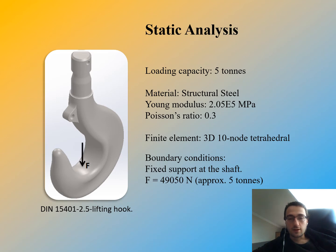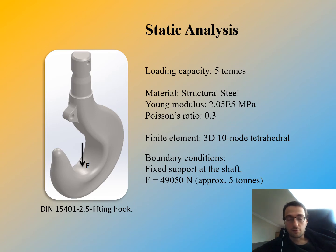Static analysis of the standard lifting hook is made. The loading capacity is 5 tons. The material used is structural steel, with a Young's modulus of 2.05×10⁵ megapascals and a Poisson's ratio of 0.3. The finite element used in the analysis is a 3D 10-node tetrahedral. The boundary conditions are a fixed support at the shaft, and the applied force is 49,050 newtons.